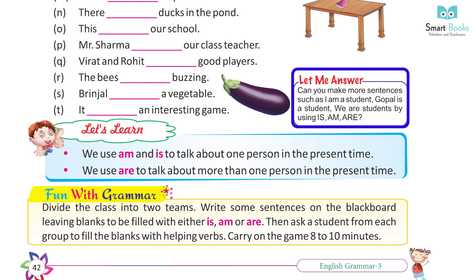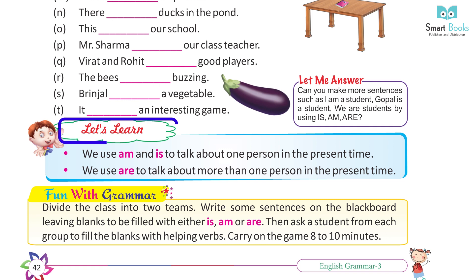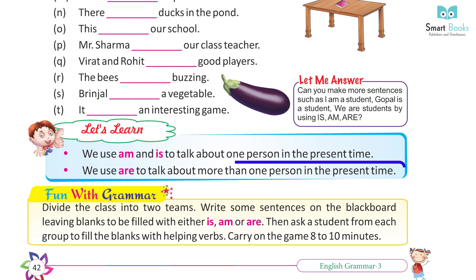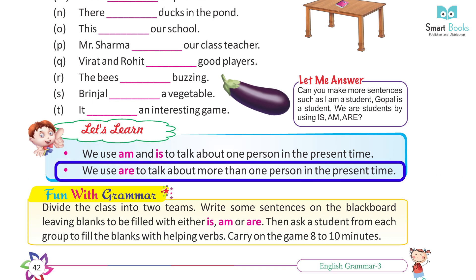Can you make more sentences using is, am, are? For example: I am a student. Gopal is a student. We are students. Let's learn: We use 'am' and 'is' to talk about one person in the present time. We use 'are' to talk about more than one person in the present time.